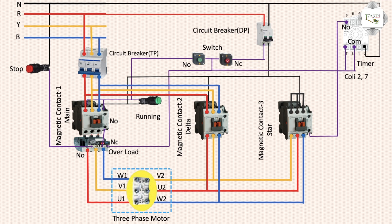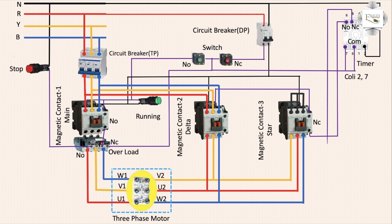Pin 6 NO outlet — star magnetic contact connection, NO connection. Timer NO terminal to magnetic contact — star magnetic contact. NC connection: NC outlet to delta magnetic contact coil connection A1. Switch NC to magnetic contact delta connection — delta connection coil connection same. NC outlet to delta magnetic contact.